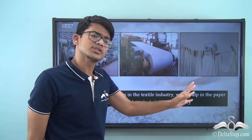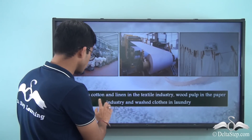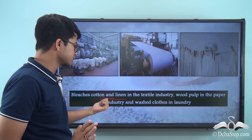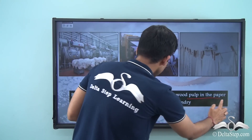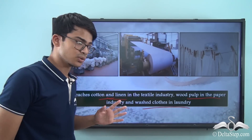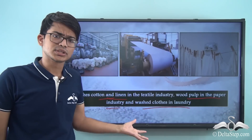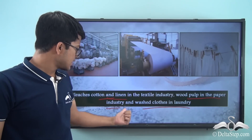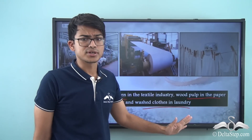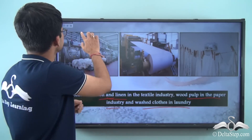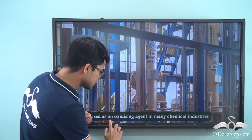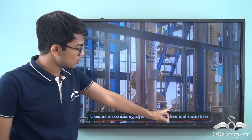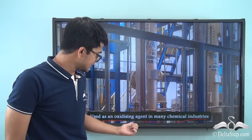Bleaching powder is not just used at home. It bleaches cotton and linen in the textile industry. It is also used for wood pulp in the paper industry, and for washing clothes in the laundry. Bleaching powder has multi-faceted uses across the textile, paper, and laundry industries. It is also used as an oxidizing agent in many chemical industries.